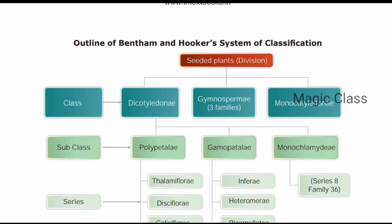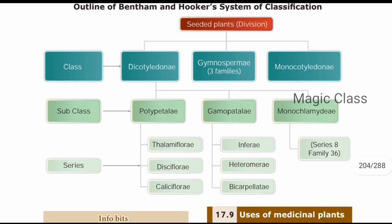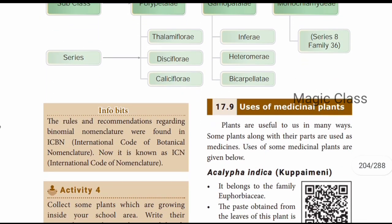The outline of Bentham and Hooker's system of classification includes the following classes: Dicotyledons, Gymnosperms, and Monocotyledons. Dicotyledons are further classified into subclasses: Polypetalae, Gamopetalae, and Monochlamydeae. Each class is further divided into series.